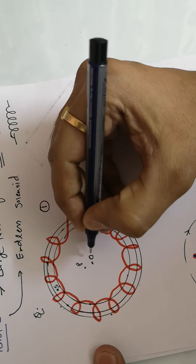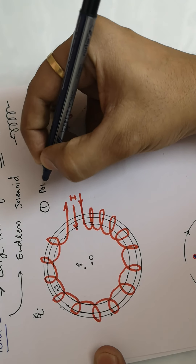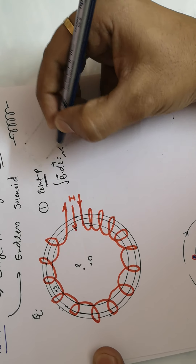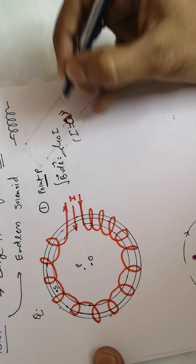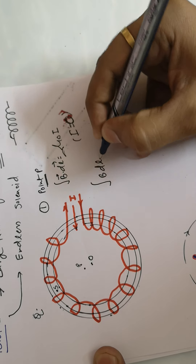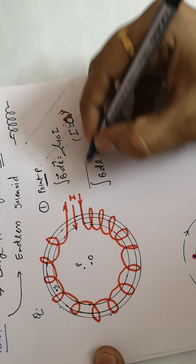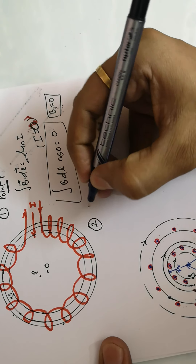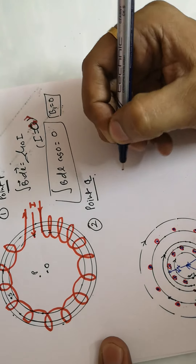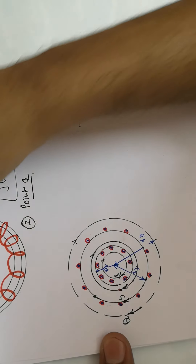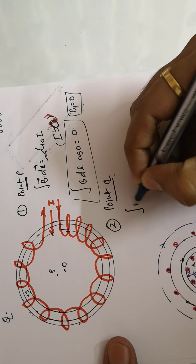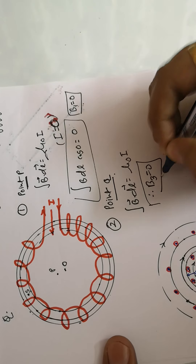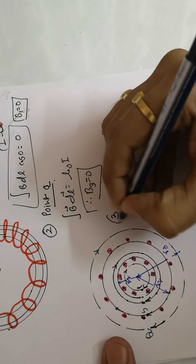For point P inside the toroid, applying Ampere's law: the integration of B·dl = μ₀I, but the current enclosed is zero. So B·dl·cos0° gives current equal to zero, meaning the magnetic field B at the interior (point P) is zero. Similarly for point Q outside at radius r₃, applying Ampere's law again gives B₃ = 0, because no net current is enclosed by that path either.